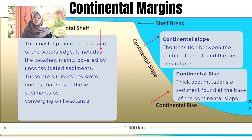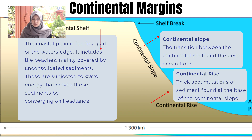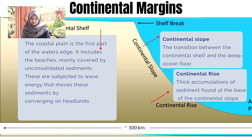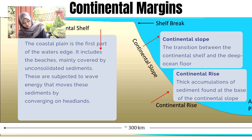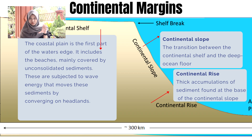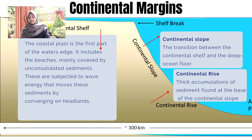These are subject to wave energy that moves this sediment by converging on headlands. Next, continental slope. The continental slope is the second part of the continental margins. The shelf is very steep. Continental slope is the boundary between the continental shelf and the deep ocean floor. And the third component is the continental rise, which is the thick accumulation of sediment found at the base of the continental slope.